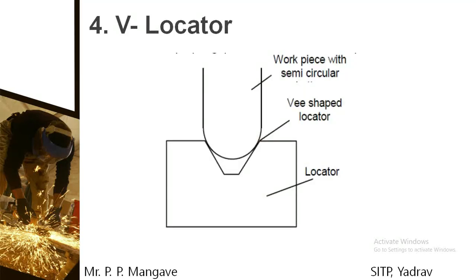Next is a V locator. For workpieces with semicircular dimensions or semicircular surfaces, a V-shaped locator can be used. This locator is mostly used for machining different ends which are non-circular — the circular end is folded into the V-type portion, as shown in the figure.